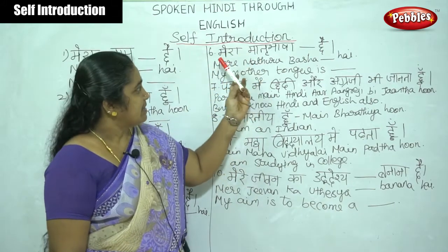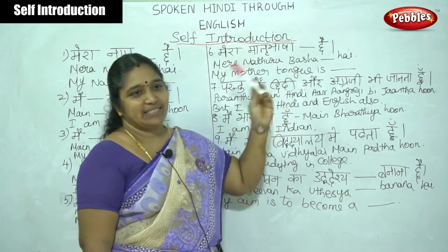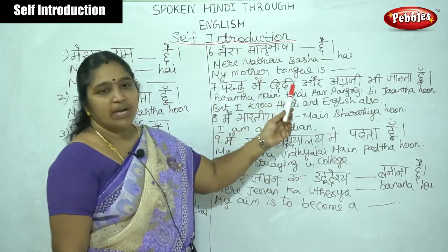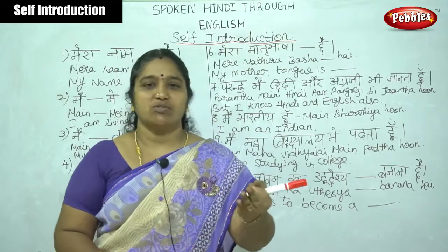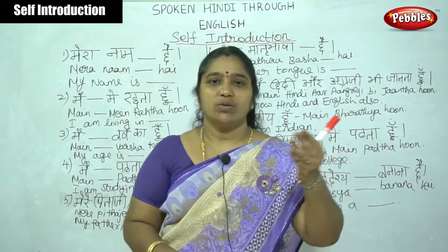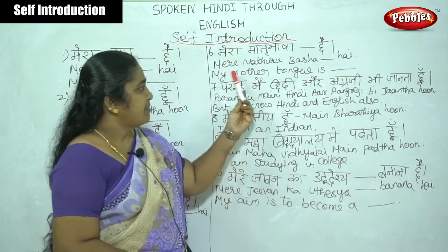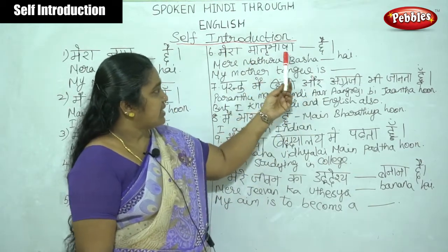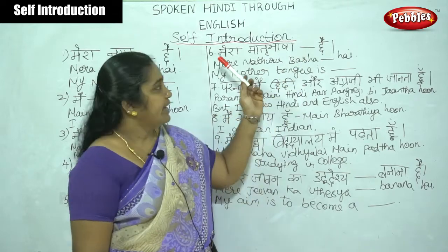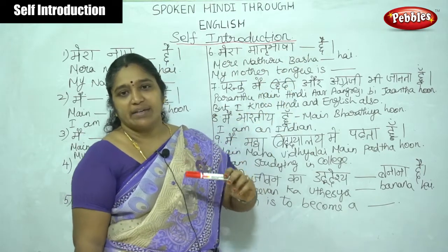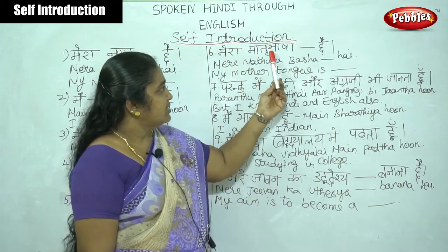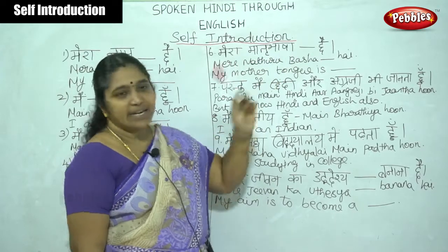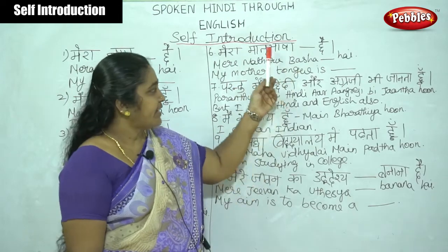For mother tongue: 'Mera matrubhasha dash hai.' Here we write our mother tongue — Tamil, Telugu, Malayalam, or Kannada. For example: 'Mera matrubhasha Tamil hai,' 'Mera matrubhasha Telugu hai,' 'Mera matrubhasha Malayalam hai,' 'Mera matrubhasha Kannada hai.'